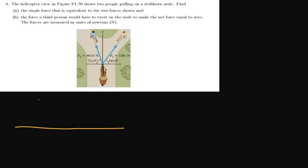Let's get started. We have a diagram where one force F1 is being applied in one direction and another force F2 in another direction. We have been told that F1 is 120 Newtons and F2 is 80 Newtons. We have an angle theta of 60 degrees for F1 and an angle theta of 75 degrees for F2.